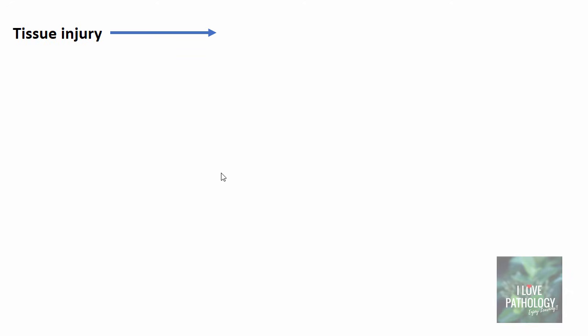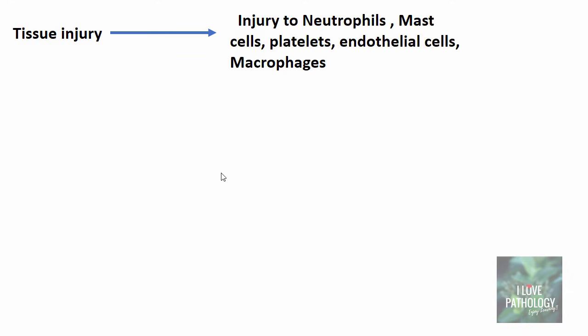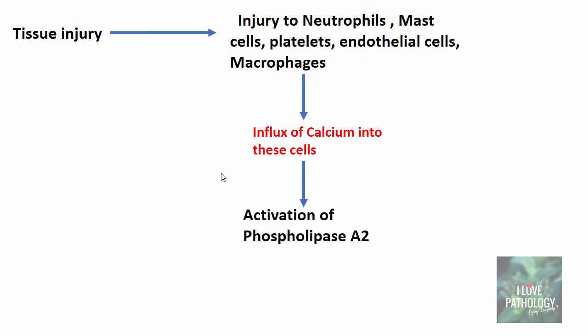Coming back to inflammation, whenever there is a tissue injury, there is injury to the cells within these tissues. These cells could be neutrophils, mast cells, platelets, endothelial cells and macrophages. During the process of cell injury, when the injury is continuous, repetitive or irreversible, there is a lot of calcium which moves inside the cytoplasm. This increase in intracellular calcium levels activates many enzymes within the cells, one of which is phospholipase A2.